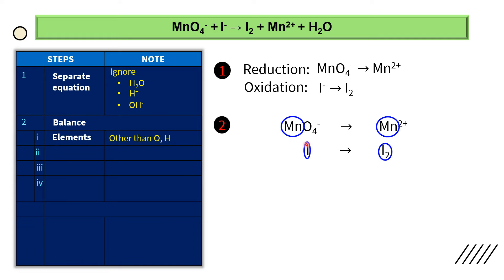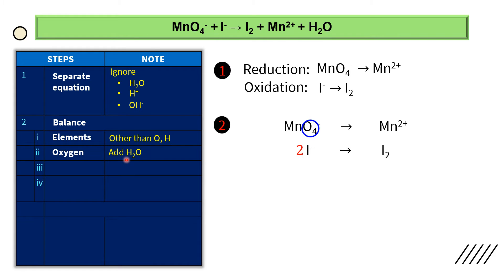Since iodine is not balanced, we add a coefficient. The left side is lacking, so we add 2 in front of I⁻. Number 2: balance oxygen. For the first half equation, there are 4 oxygen on the left but 0 on the right — not balanced. To balance oxygen, we add H2O on the right side, which is lacking 4 oxygen, so we add 4H2O. For the second half equation, there is 0 oxygen on both sides, so oxygen is already balanced.